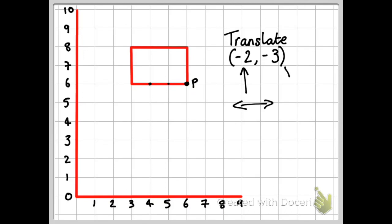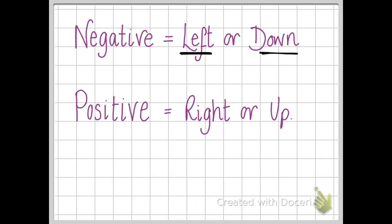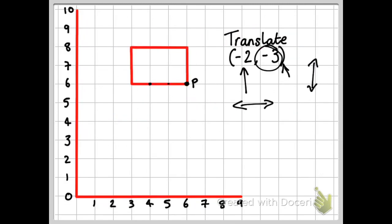This second number decides if I go up or down. And again, it's negative three. It's a negative number, so that means I'm going to go down by three. One, two, three. So that is the new destination of P after it's been translated.